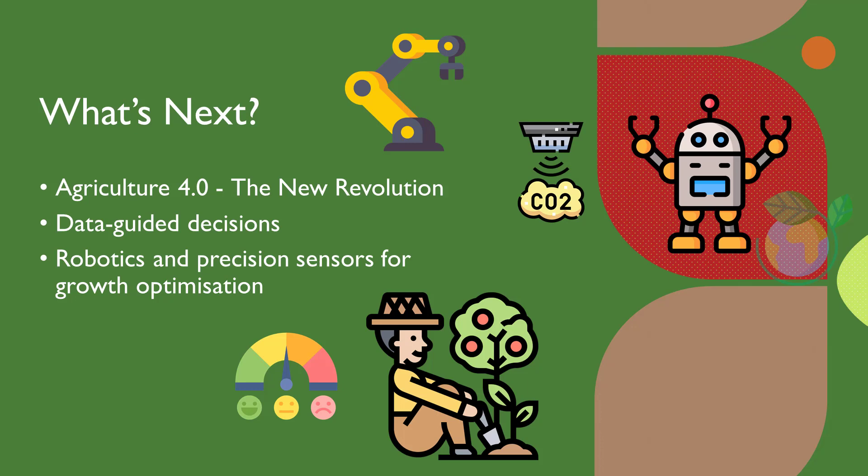Going forward, we might also expect a different trend to emerge within highly developed countries with more health-conscious populations. The focus on starch-based crops like corn will shift to more plant-based proteins like soybeans and other legumes, amongst others.